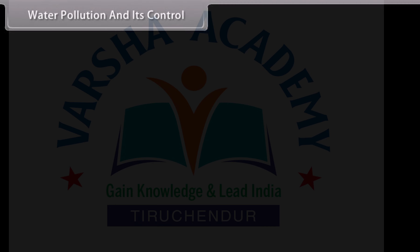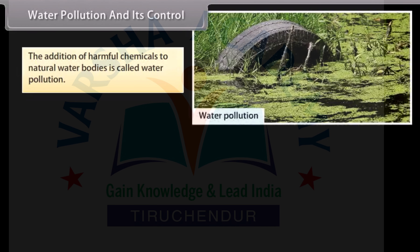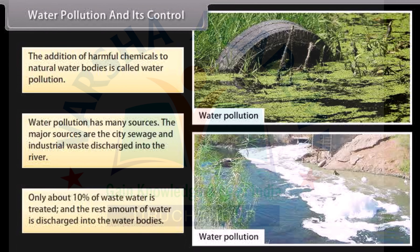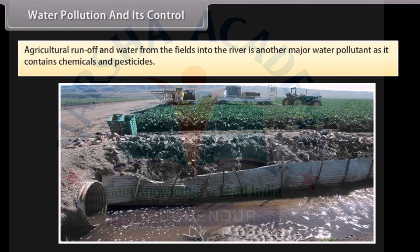The addition of harmful chemicals to natural water bodies is called water pollution. Water pollution has many sources. The major sources are city sewage and industrial waste discharged into rivers. Only about 10% of waste water is treated; the rest is discharged into water bodies. Agricultural runoff from fields into rivers is another major water pollutant, as it contains chemicals and pesticides.